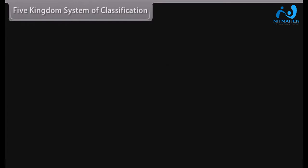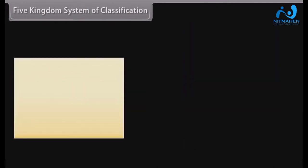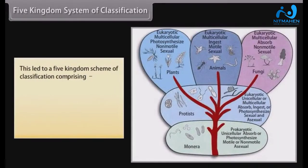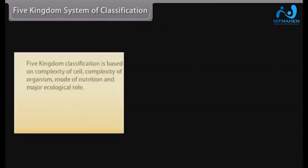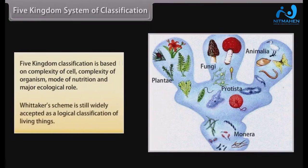The Five Kingdom System of Classification: In 1969, the American ecologist Robert H. Whittaker proposed that fungi differ enough from other microorganisms to justify calling them a separate kingdom. This led to a Five Kingdom Scheme comprising Monera, Protista, Fungi, Plantae, and Animalia. Five Kingdom Classification is based on complexity of cell, complexity of organism, mode of nutrition, and major ecological role. Whittaker's scheme is still widely accepted as a logical classification of living things.